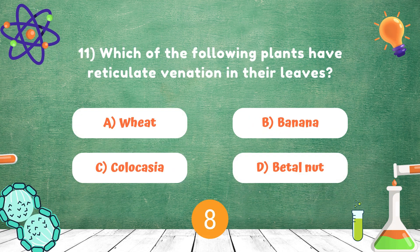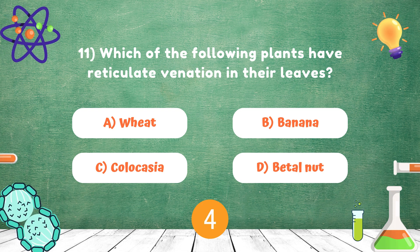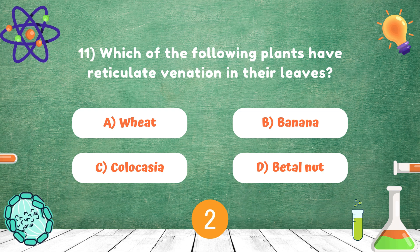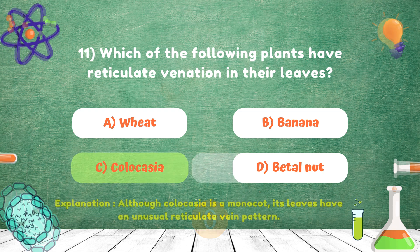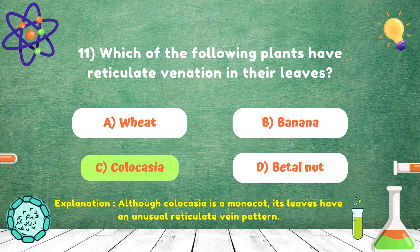Which of the following plants have reticulate venation in their leaves? Answer is Colocasia.